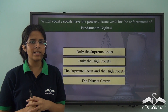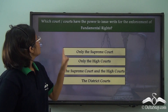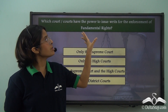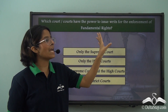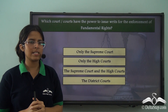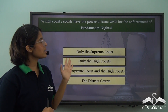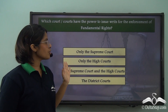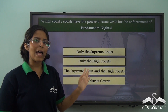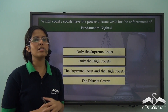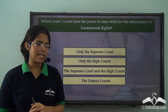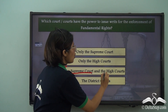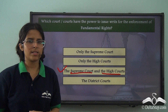Can you answer this now? Which court or courts have the power to issue writs for the enforcement of fundamental rights? Is it only the Supreme Court? Only the High Courts? The Supreme Court and the High Courts? Or the District Courts? The correct answer is the Supreme Court and the High Courts.